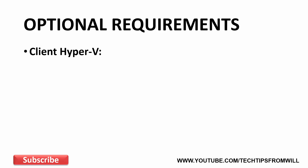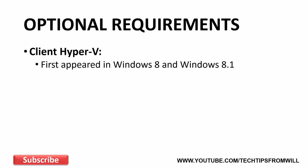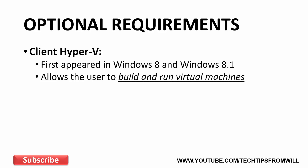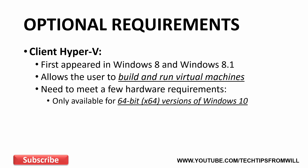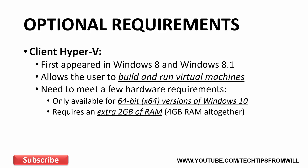The next feature is Client Hyper-V. Client Hyper-V first appeared in Windows 8 and Windows 8.1, and is a feature that allows the user to build and run virtual machines on their Windows 10 computer. However, to use Client Hyper-V, you will need to meet a few hardware requirements. First of all, the feature is only available for 64-bit versions of Windows 10. Also, to use Client Hyper-V effectively, the user must ensure that their Windows 10 computer has an extra 2 GB of RAM. Since 64-bit versions of Windows 10 require 2 GB of RAM to simply install the operating system, if you plan to use Client Hyper-V, you should ensure that your device has at least 4 GB of RAM.